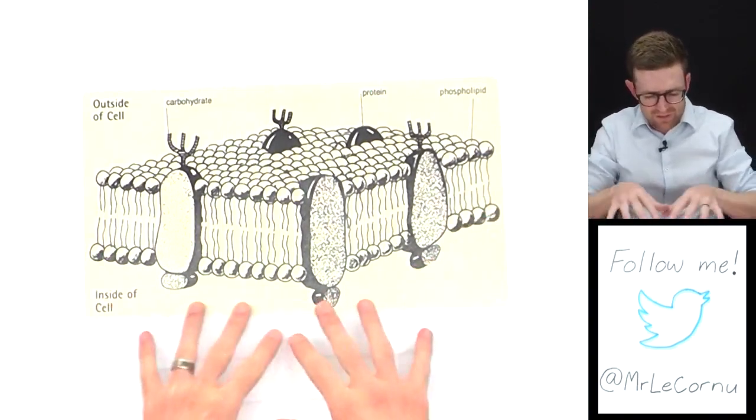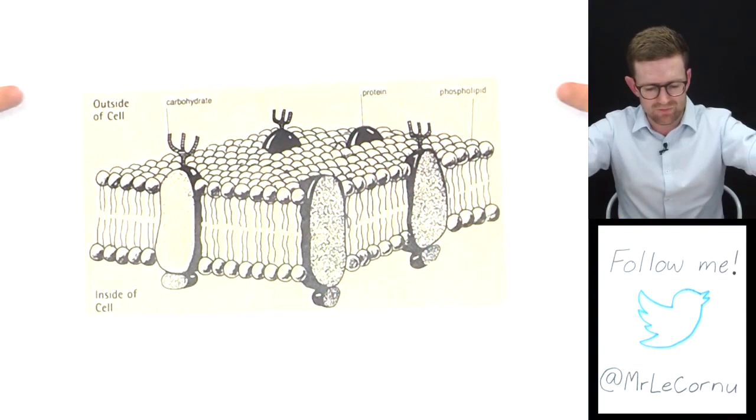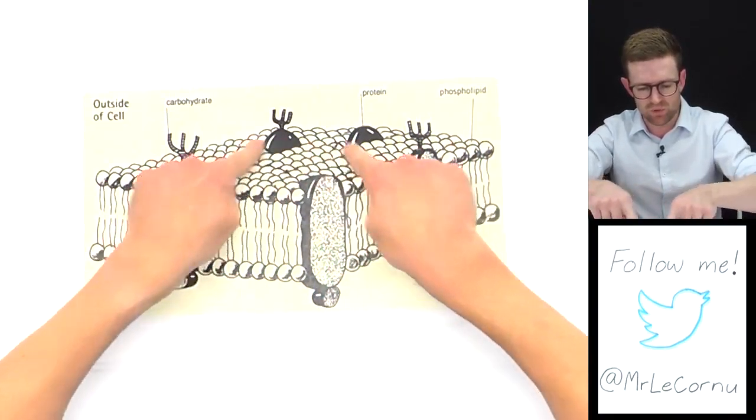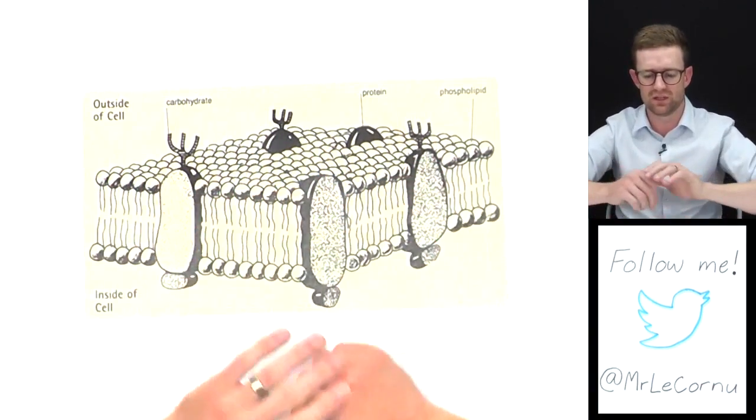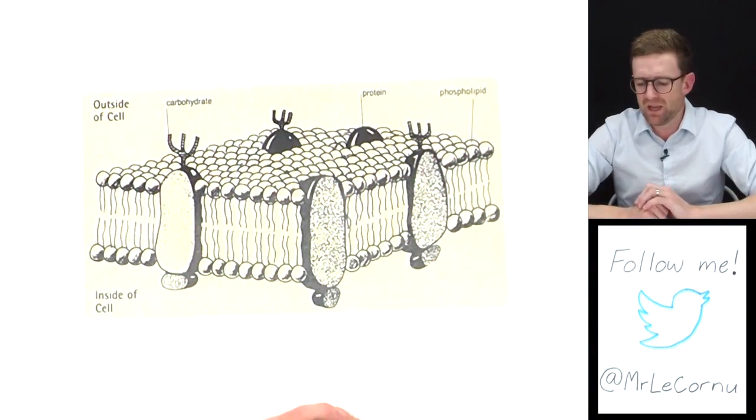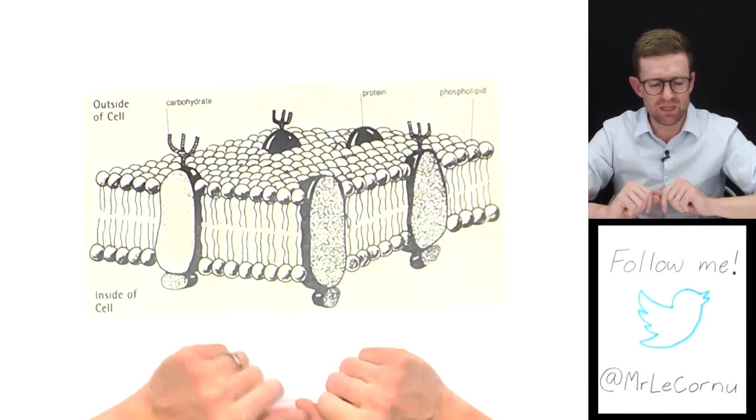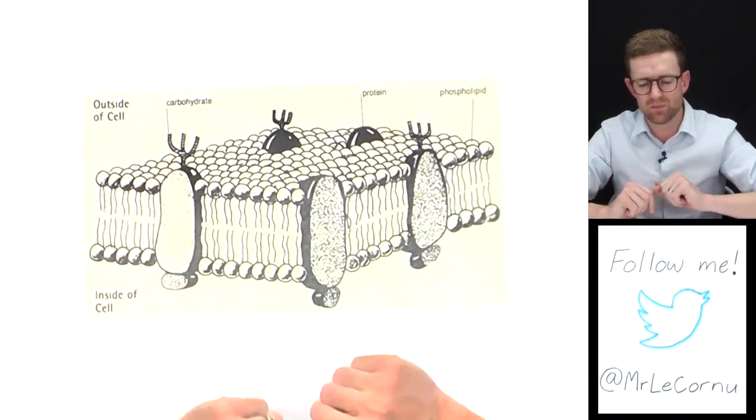Here's the inside of the cell and the outside. This is a small section of the cell membrane which would wrap around the outside of our cell. The cell membrane is made of key components like phospholipids, proteins, and carbohydrates.